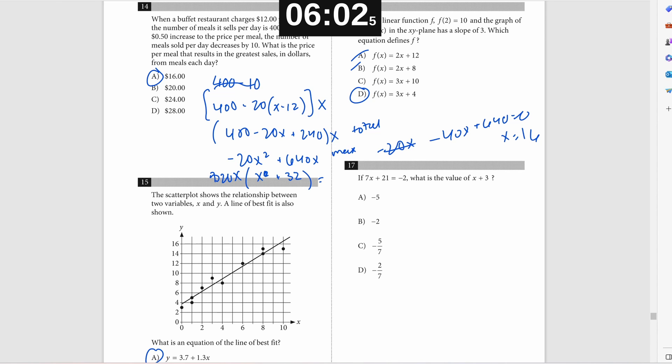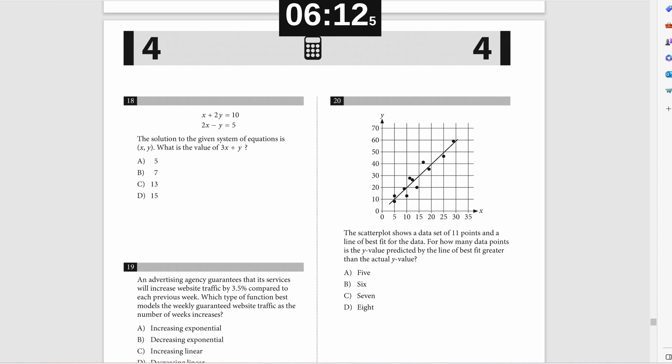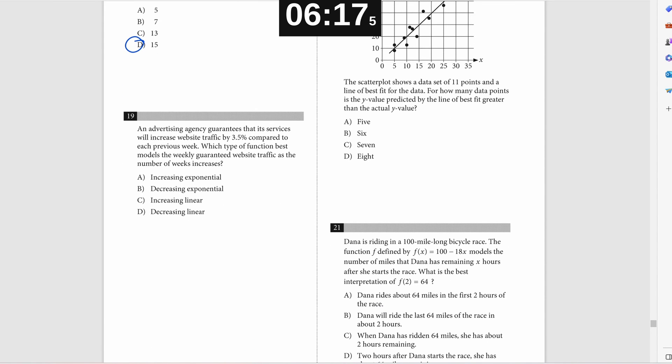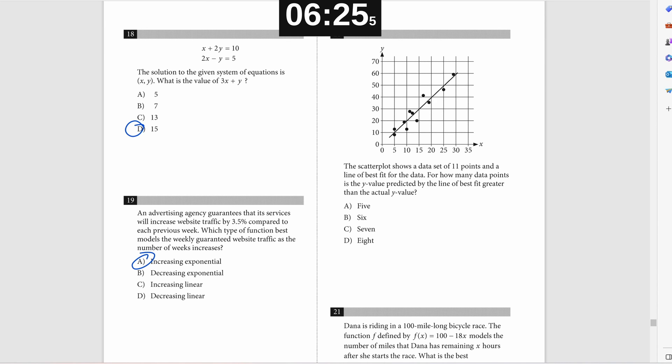Problem number 17, if you divide both sides of the equation by seven, you get X plus three equals negative two over seven. That's the most efficient way to solve. Don't solve for X, solve for X plus three. Problem number 18, same exact idea. The easiest way to solve for three X plus Y is just to add both sides of the equation together. 10 plus five is 15. Very easy. Problem number 19, if you're increasing by percentage every single year, that's an exponential function and it's increasing by 3.5. So it's increasing exponentially. Problem number 20. I'm just counting the dots below the line. There are five of them.